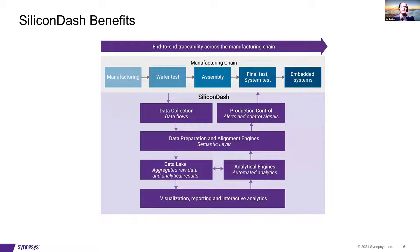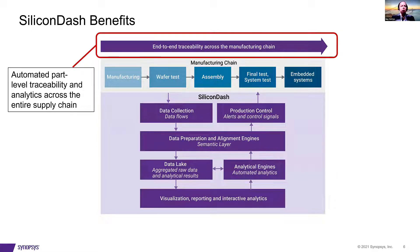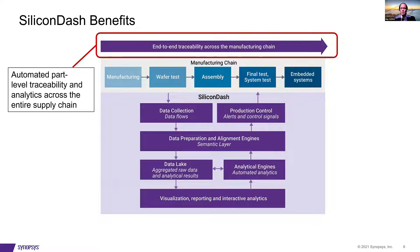One key thing Silicon Dash provides is end-to-end traceability across the manufacturing chain, partly by capturing electronic chip ID information. Almost every chip has an ECID — an electronic chip ID — associated with it. We leverage that to keep track of where each die is along the manufacturing process. That traceability is really the key to finding the source of problems early on in manufacturing.